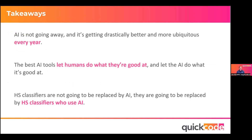What's our takeaway? Number one, AI is not going away and is getting drastically better and more ubiquitous every single month it seems. The best AI tools let humans do what they're good at — understanding the nuance of things like HS classifications — and let the AI do what it's good at, which is synthesizing large amounts of data and serving them up to you. And the last thing: HS classifiers are not going to be replaced by AI, but they are going to be replaced by HS classifiers who use AI. I think we'll take some questions now — hopefully there are some.